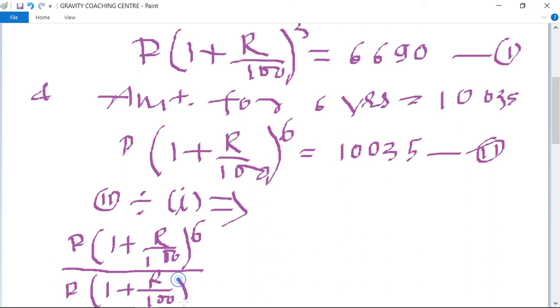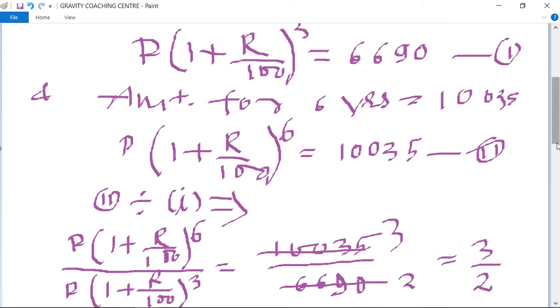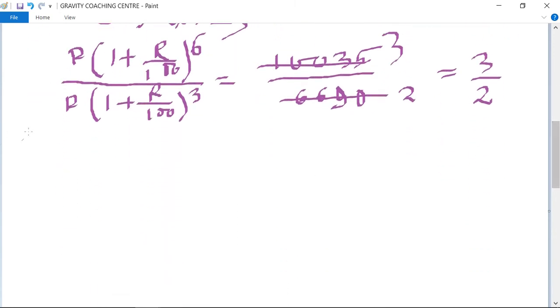(1 + R/100)^3 equals 10,035 divided by 6690. This will become 3 upon 2.